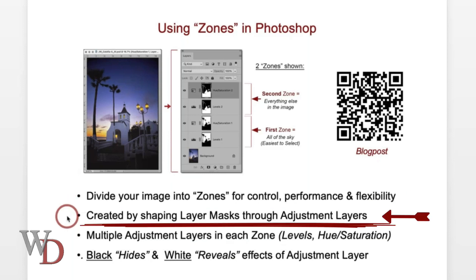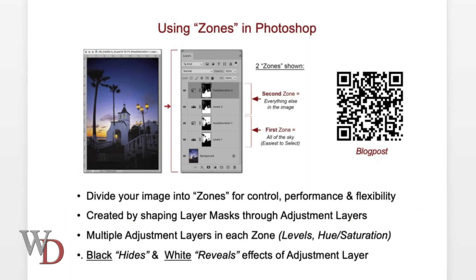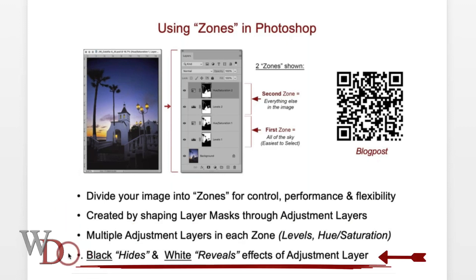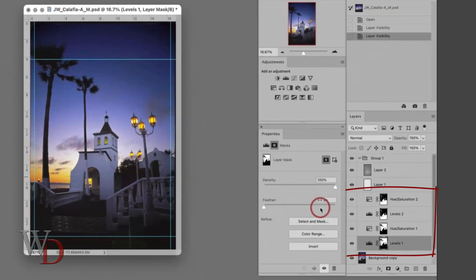These zones are created by shaping your layer masks, and you usually have multiple adjustment layers in each zone. And remember what I said earlier: black hides and white reveals the effects of an adjustment layer.